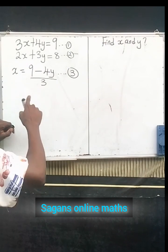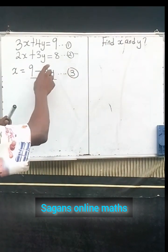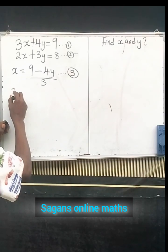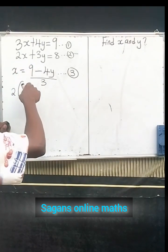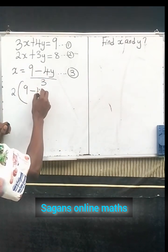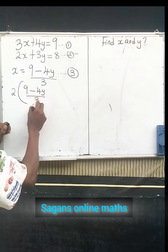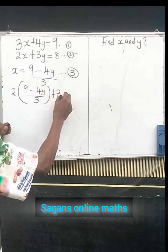My second step, I'm going to substitute equation 3 into equation 2. So now, anywhere I see x, I substitute the value. So I will put (9 - 4y)/3 in the place of x here. So now this is 2 times (9 - 4y)/3 plus 3y equals to 8.